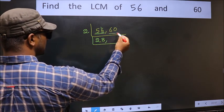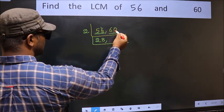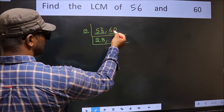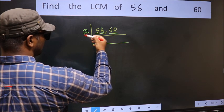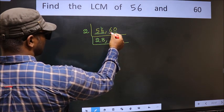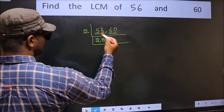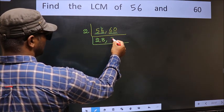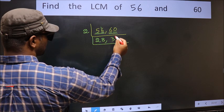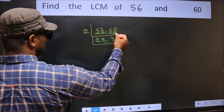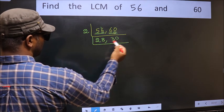The other number is 60. Last digit is 0, so this is divisible by 2. First number is 6. When do we get 6 in the 2 table? 2, 3 is 6. This 0 goes down as it is.